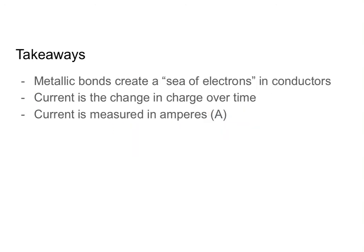Let's talk about our takeaways. First, metallic bonds create a sea of electrons in conductors. Second, current is the change in charge over time — i equals q over t. Finally, current is measured in amperes, represented with a capital A. So there you have it, folks — it's your turn now. Happy solving!